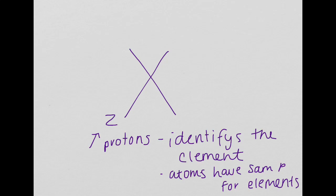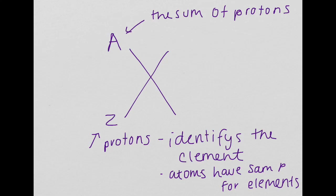Then we move on to the mass number, which is on the top, and that is represented by the symbol A. This is simply defined as the sum of protons and neutrons.